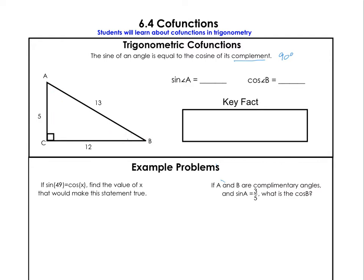So let's put down a little note: angle A plus angle B equals 90 degrees always. These two angles that aren't 90 always add up to 90.